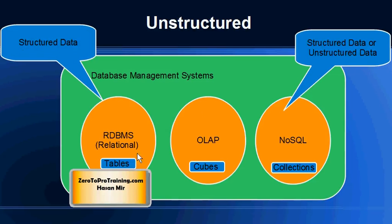In relational databases and online analytical processing systems, data is structured and you have to define the table structure in advance. You have to tell the system the table will have a certain number of columns, each column's data type, and the maximum value you can insert. This means you can't handle unstructured data where there is no fixed format, or the format is either changing or one instance of an entity is available in one structure and another in a different structure. NoSQL databases can handle both structured and unstructured data.